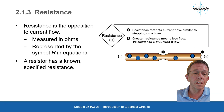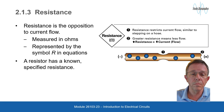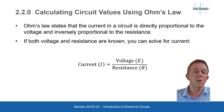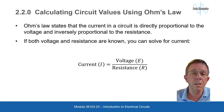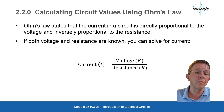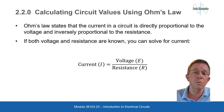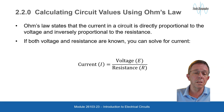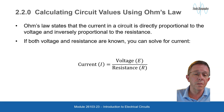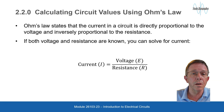A resistor has a known, specified resistance. Ohm's law states that the current in a circuit is directly proportional to the voltage and inversely proportional to the resistance. If both voltage and resistance are known, you can solve for current: current equals voltage divided by resistance.